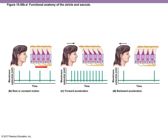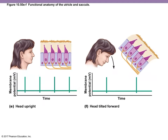When there's acceleration, the hair cells bend in one direction; with backward acceleration they bend the other way, so the brain receives different information depending on the direction of movement. The otoliths help weigh down the gel so you can detect static head tilt even without momentum. This is basically how the utricle and saccule work.